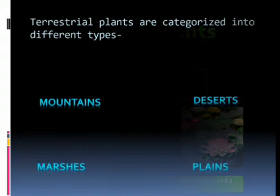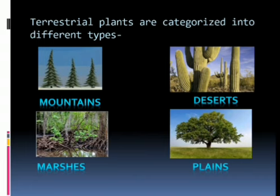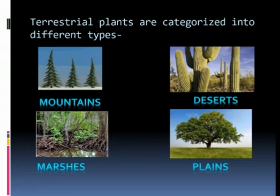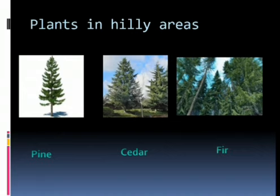Plants can be categorized into two different types adapted to their habitat. They are terrestrial plants and aquatic plants. Plants that live and grow on land are terrestrial plants. Terrestrial plants are categorized according to the place they are adapted to, such as mountains, deserts, marshes, and plains. Let us take a quick look into the adaptations of plants in these regions.